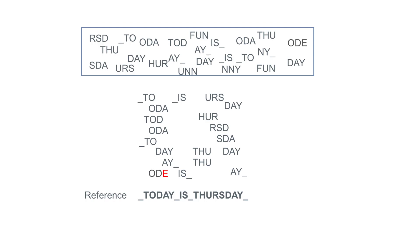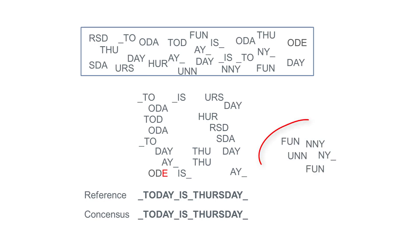Now that we have all our pieces mapped to the reference, we can create a consensus sequence. As you may have noticed, however, there are some reads in our collection that do not map to the reference. This is the biggest disadvantage of read mapping, as you need a good reference to map your reads against. Anything that does not map to the reference is lost, and therefore unusable in any further analysis.